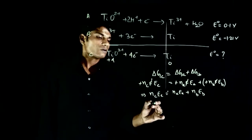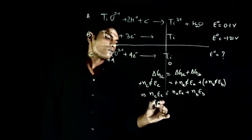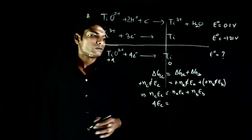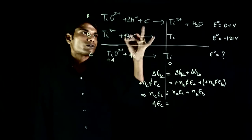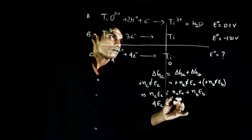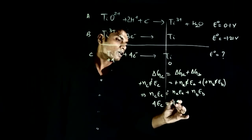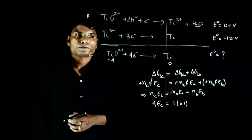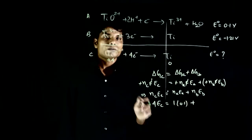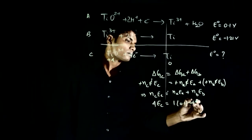Now, you can put it in. So, this is 4. 4 E of C is equal to 1 into E of A is equal to 0.1 plus B reaction is 3 into